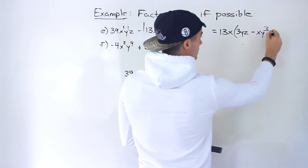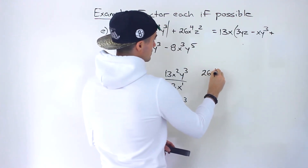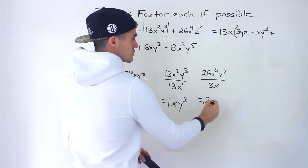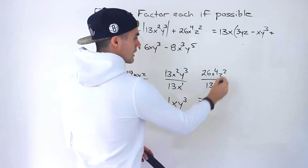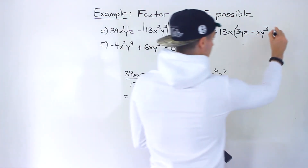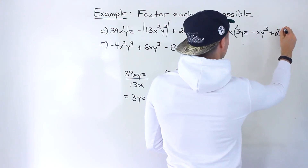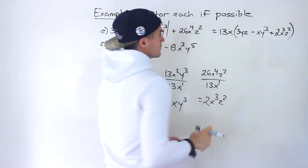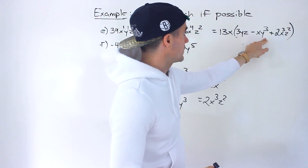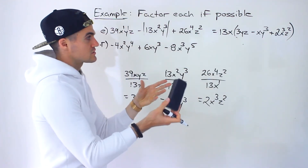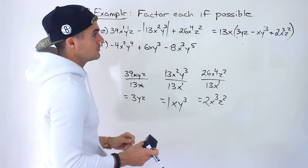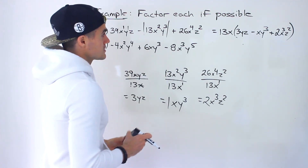So the final answer is 13x(3yz − xy³ + 2x³z²). Quick check: 3, 1, and 2 share no common factor. The first term has yz, the second has xy, the third has xz — different variable combinations. There's no x in the first term, no z in the second, no y in the third, so no further variable can be factored out. That is the solution.